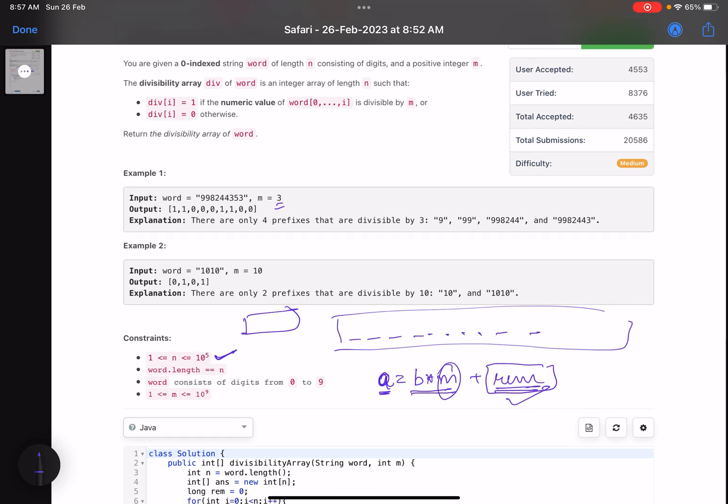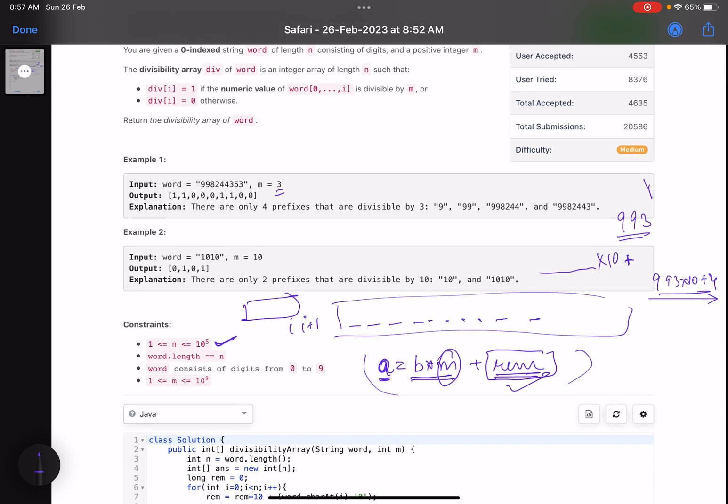Suppose I've calculated the result till index i, now I move to index i plus 1. What I'll do is multiply whatever number I've calculated till here by 10 and plus the current digit that is being added. In short, suppose 993 is my number, the next digit is 4, so I'll do 993 into 10 plus 4. This is how I form my number. We'll do the same thing in equation so that we do not incur overflow.